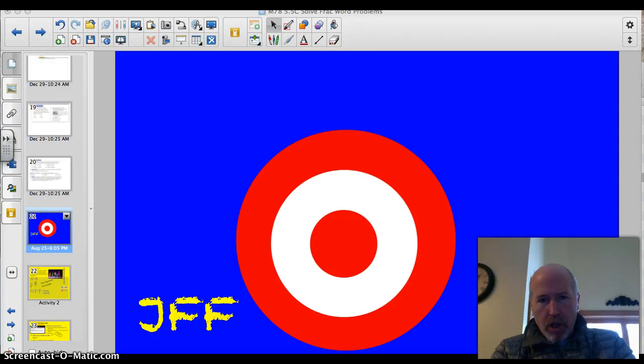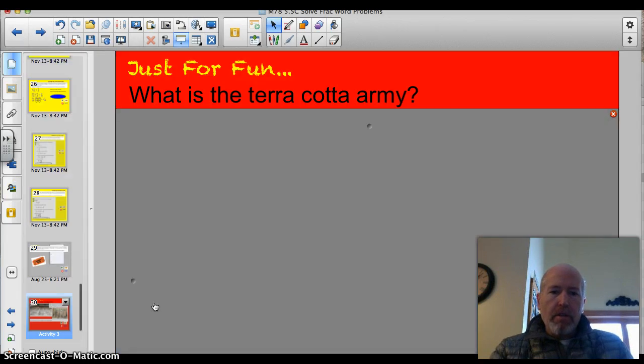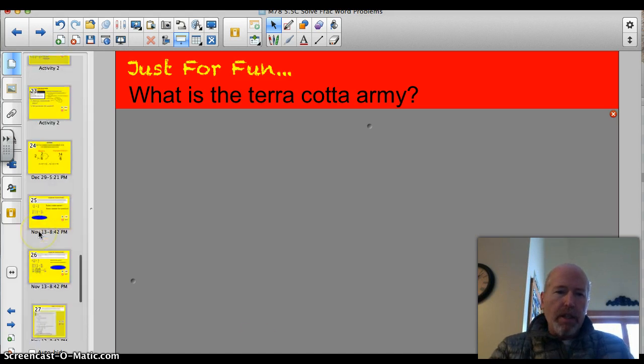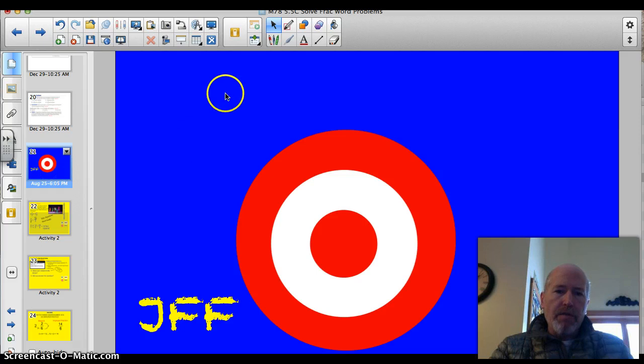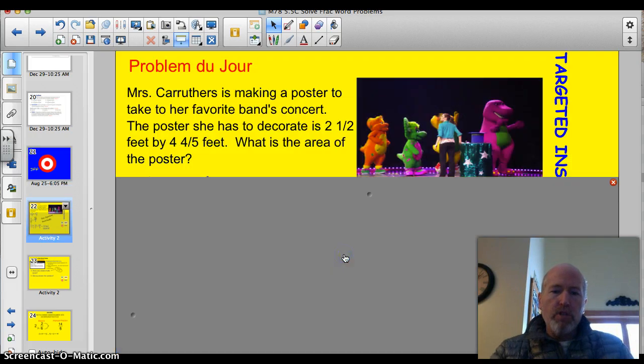Hey Valley Metal, tonight we're going to work on solving word problems that involve fractions and mixed numbers. But first, let's get to the trivia question of the day. What is the Terracotta Army? I saw it at the Minneapolis Institute of Art a couple years ago, if that helps. Alright, let's get to the official target of the day, which is 5.5C. I can solve real-world problems by multiplying fractions and mixed numbers.